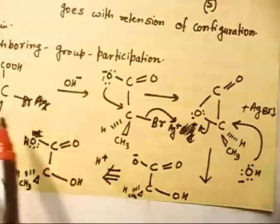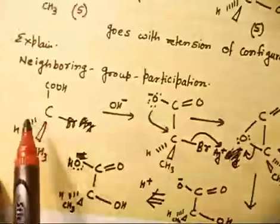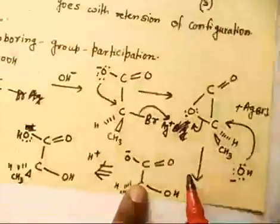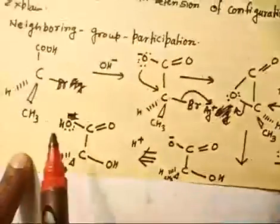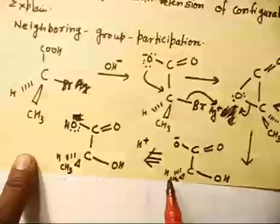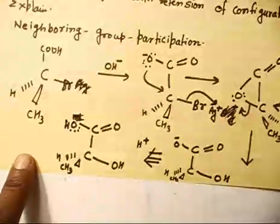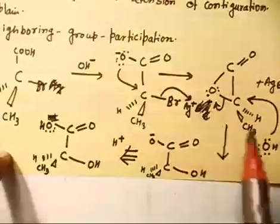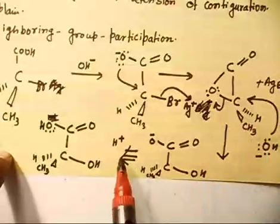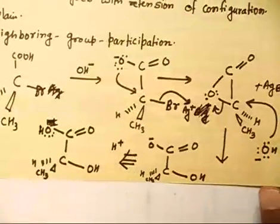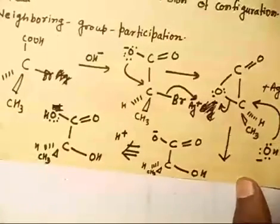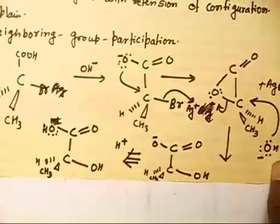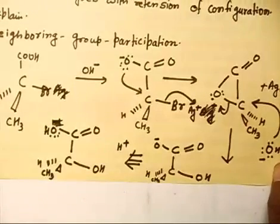Now initially this group was on this side, and now it goes back to this side. First time: O⁻ attacks here — these two groups come this side when this bond forms. Then when OH⁻ attacks again, this goes back to the other side. So this is the same side as the original — that gives retention of configuration. Basically there are two inversions: first inversion, then inversion again, so finally you have retention. If you acidify you get COOH, and you also get AgBr precipitate.